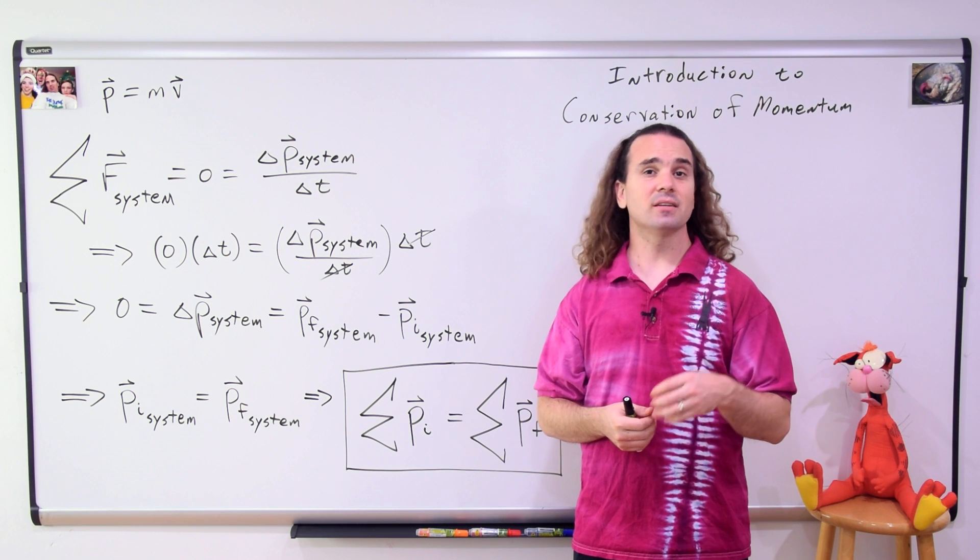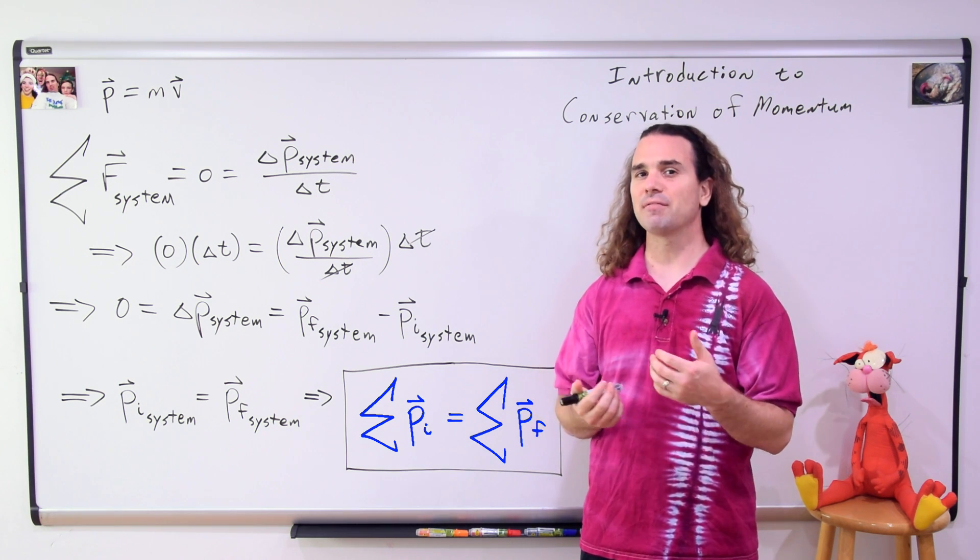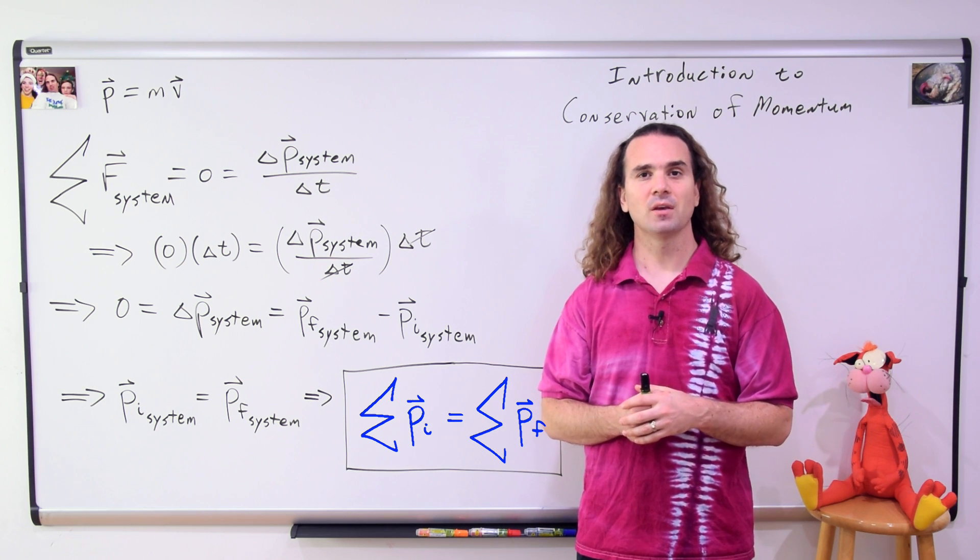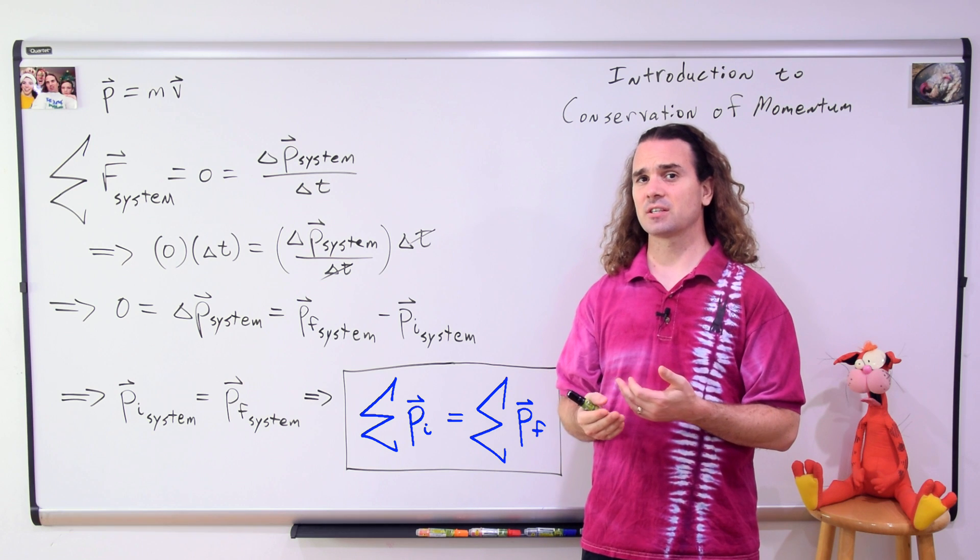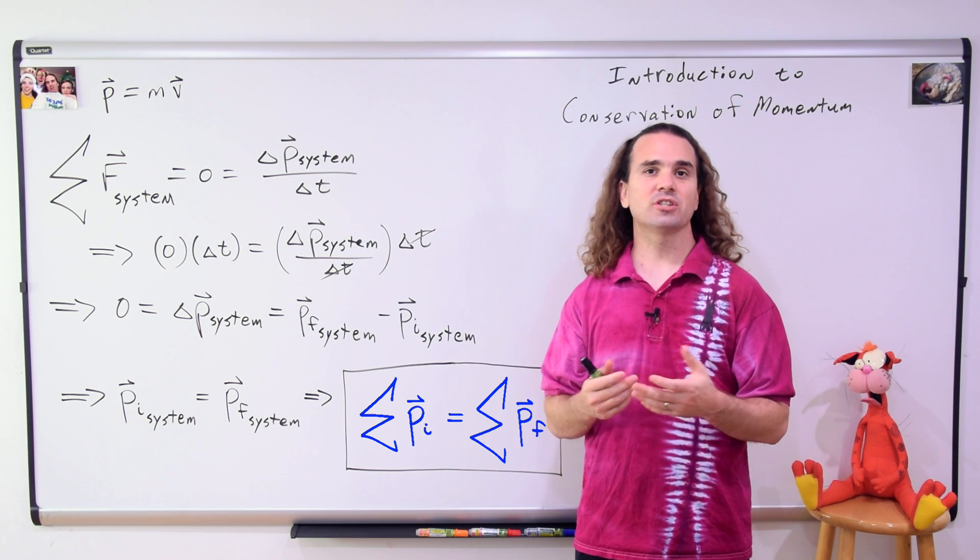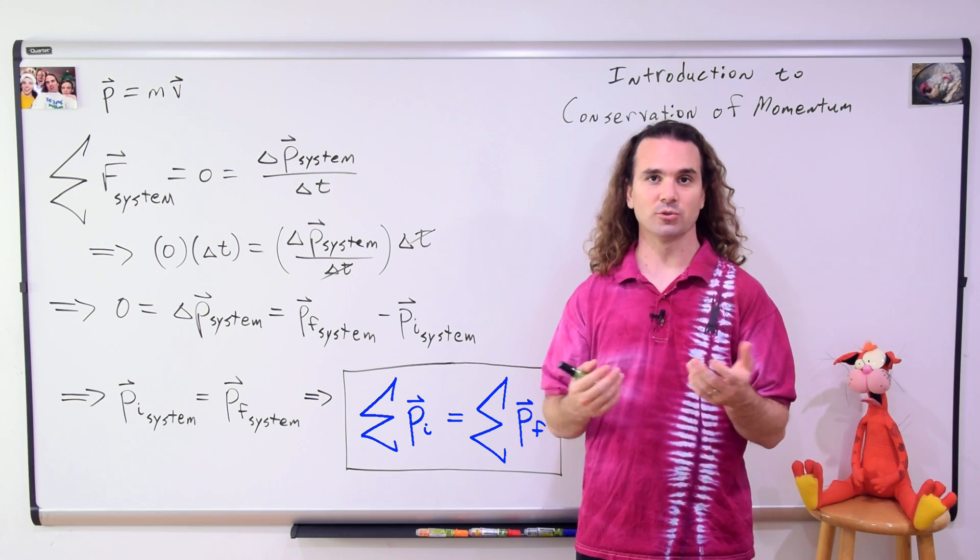The equation is usually written, the sum of the initial momenta of the system is equal to the sum of the final momenta of the system, where momentum, of course, is a vector. And in an algebra-based physics class like this one, we usually summarize that conservation of momentum is true during all collisions and explosions.